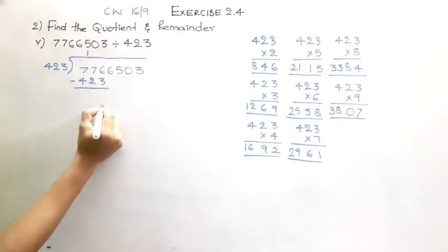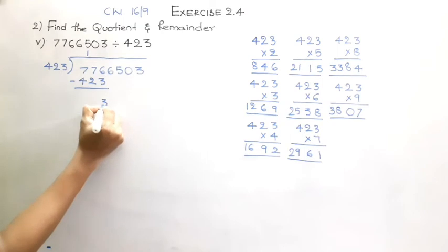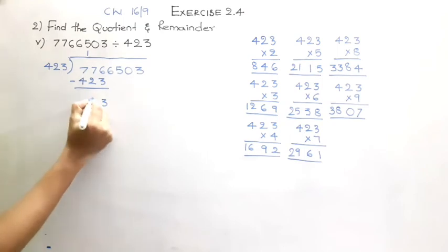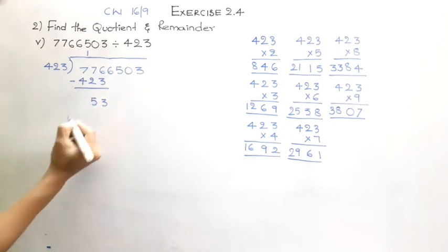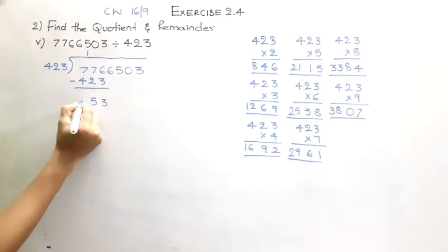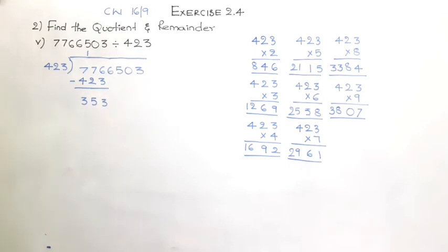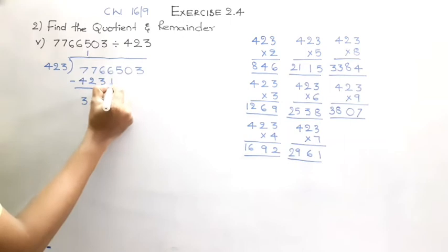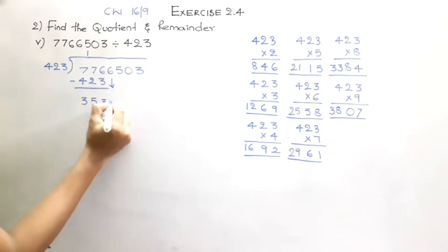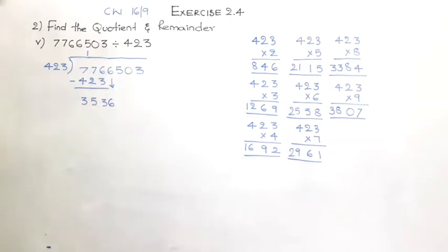6 minus 3 is 3, 7 minus 2 is 5, 7 minus 4 is 3, giving us 353. We will take down the next digit of the dividend, which is 6, making it 3536.